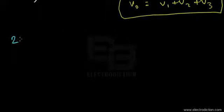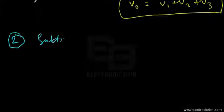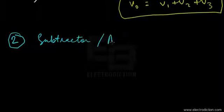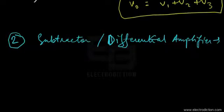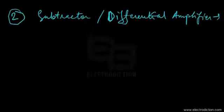We'll now move on to another op-amp circuit used for computational and mathematical functions, which is known as the subtractor, also known as the differential amplifier. In this circuit, it produces the difference between the input voltages as the output.